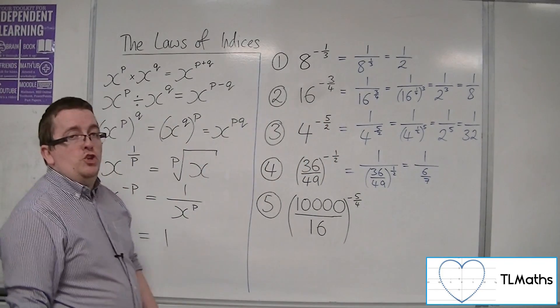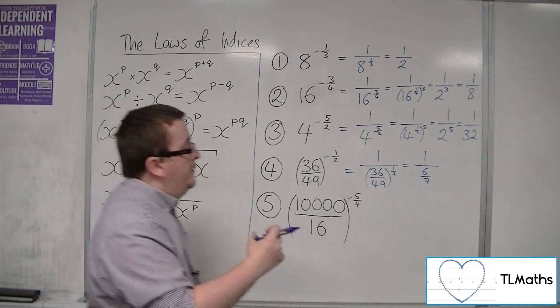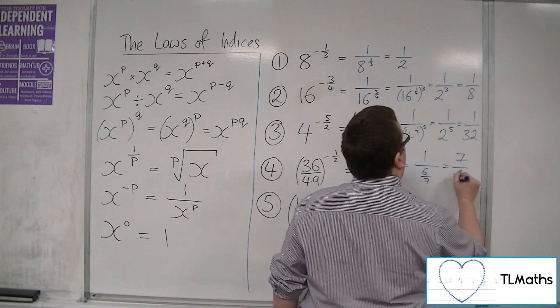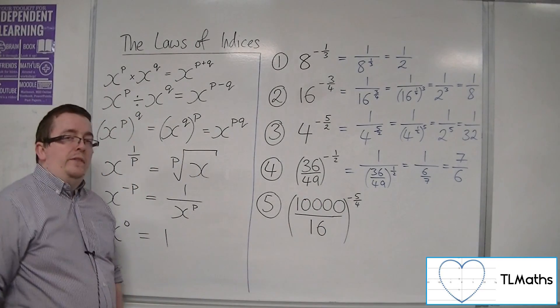Now we don't want to leave that fraction in the denominator. So 1 over 6 over 7 is the same as 7 over 6. The reciprocal of 6 sevenths.